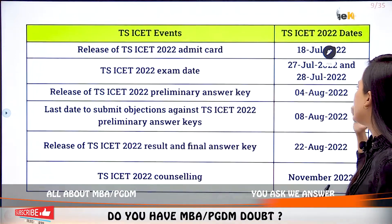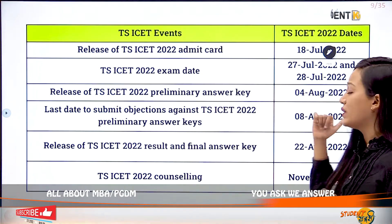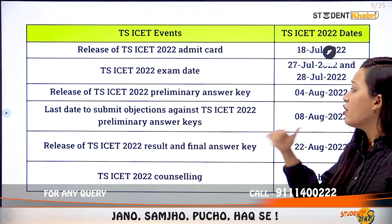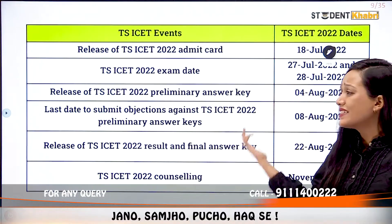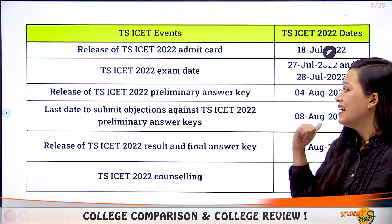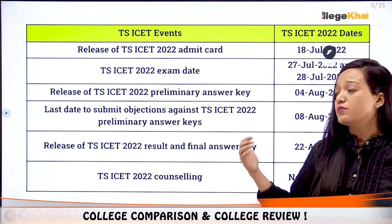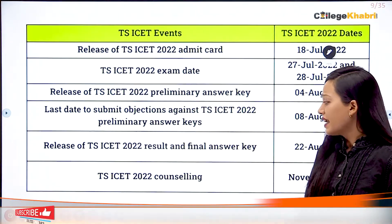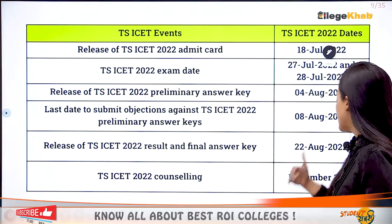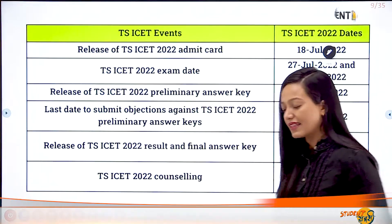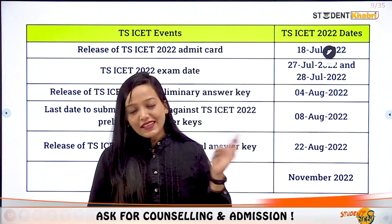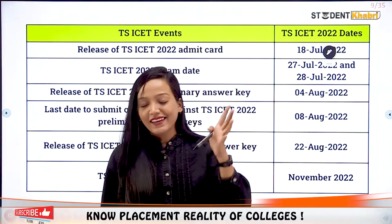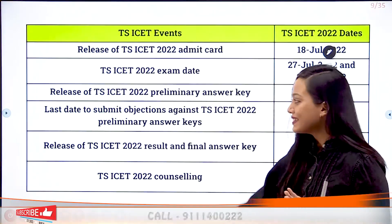The admit card will be released on 18th July. Exam dates are 27th and 28th July. Answer keys will be released on 4th August, and the last date to submit objections against the answer key is 8th August. Counseling is scheduled in the month of November, meaning admissions for this session will be processed then.